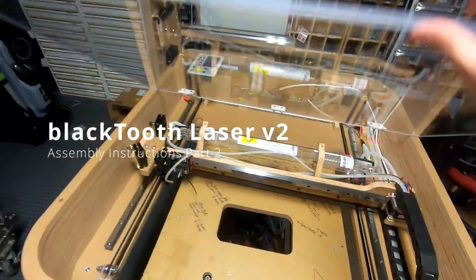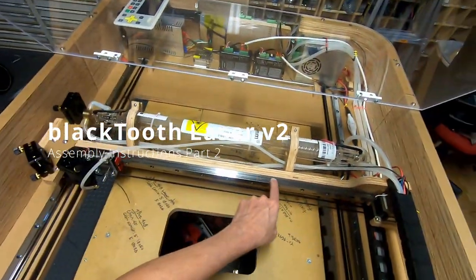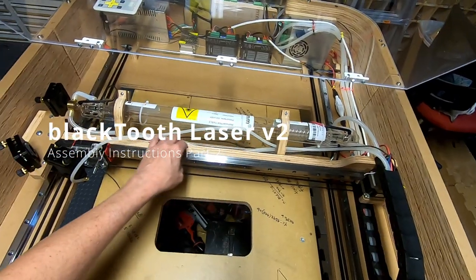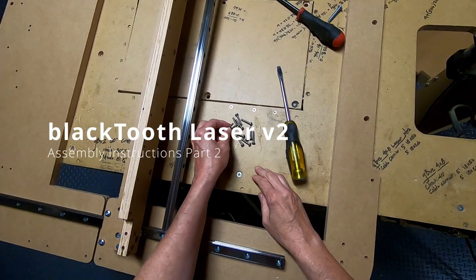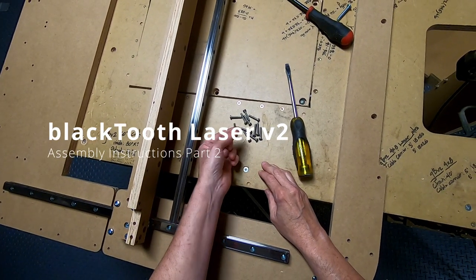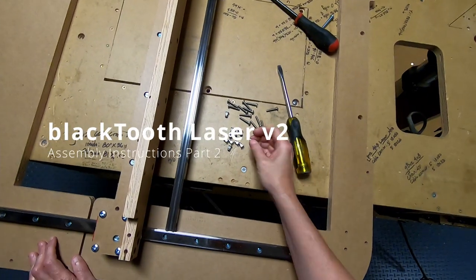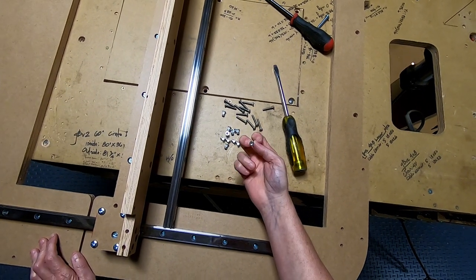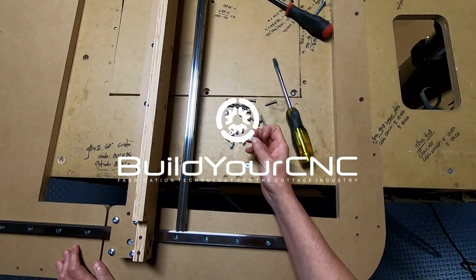In this step, the Y-axis rail will be installed on the gantry back plate. You'll need 12 number 8 screws at 1 inch long, and you'll need 12 number 8 nut inserts or rivet nuts.